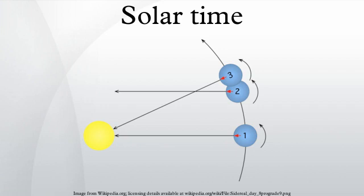So a clock that runs at a constant rate cannot follow the actual sun.